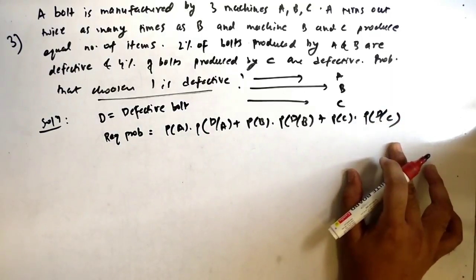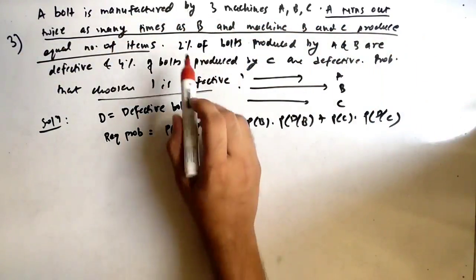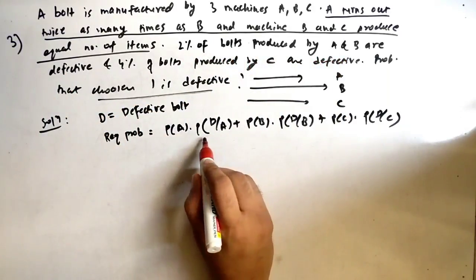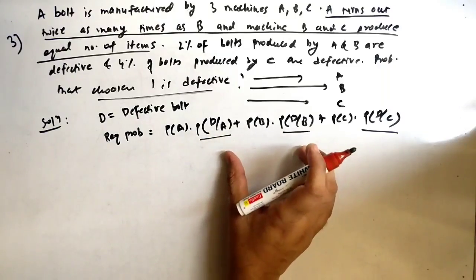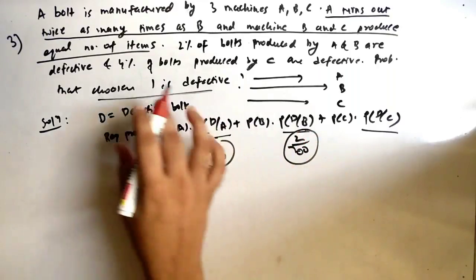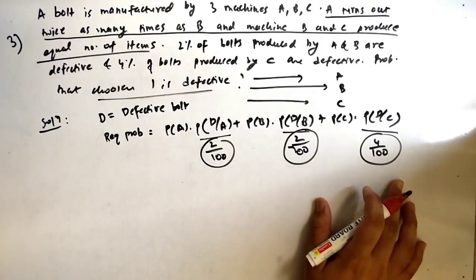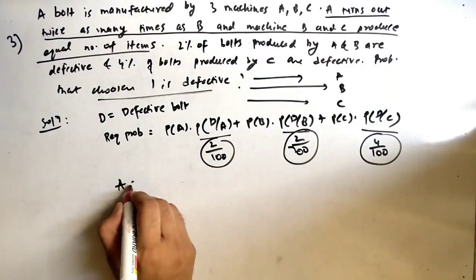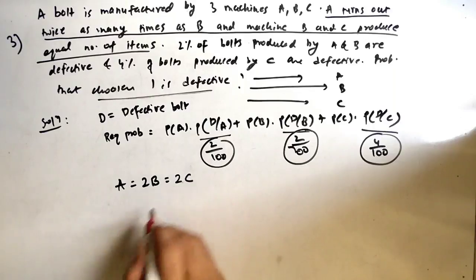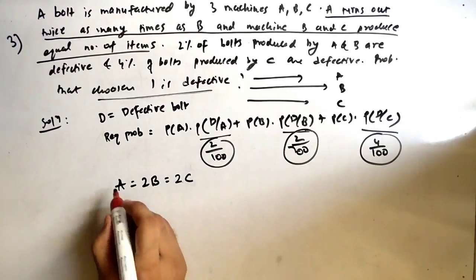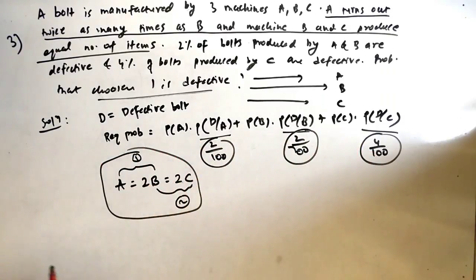The conditional probabilities P(D|A) = 2/100, P(D|B) = 2/100, and P(D|C) = 4/100 are directly given. Now we need P(A), P(B), and P(C). The conditions are: A = 2B and B = C. Setting A = 2B = 2C = k, we get B = k/2 and C = k/2.